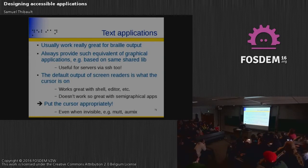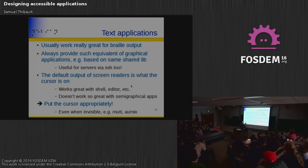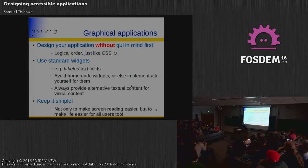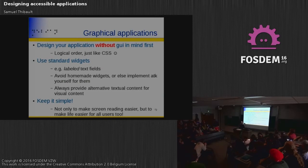For text applications: text really works great, so if you have something implemented, make a library so that you can have both a graphical and a text interface for it. For text interfaces, do put the cursor where it matters so that the screen reader will know where the user should look. For graphical applications, ideally design your application without thinking about graphics or rendering — just make it logical, like CSS — and use standard widgets, such as a label paired with a text field.